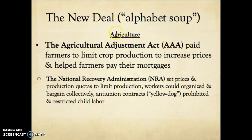The second issue Roosevelt had to deal with was agriculture. Because farmers were overproducing, the Agricultural Adjustment Act was passed, paying farmers to limit crop production in order to increase prices. It also helped farmers pay their mortgages. The NRA — National Recovery Administration — set prices on farm goods and production quotas to limit overproduction. It also allowed workers to organize and bargain collectively, and it eliminated yellow-dog contracts — contracts workers had to sign promising not to join a union, which was a violation of workers' rights. The NRA also restricted child labor.